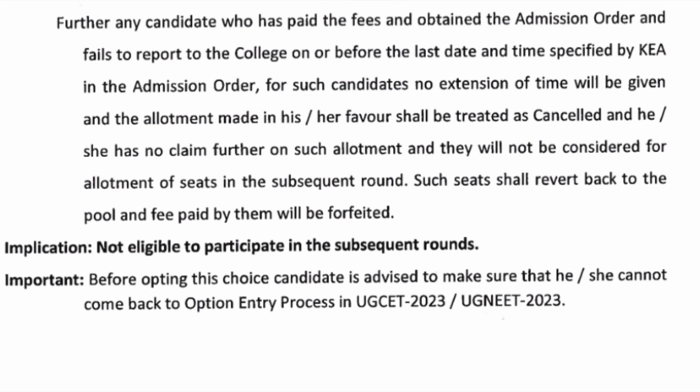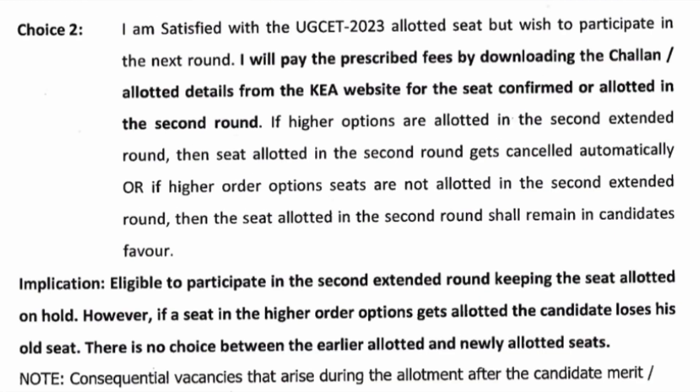Choice 1 means you are not eligible to participate in the subsequent round — you are happy with the college allotted. Next is Choice 2. Choice 2 means: I am satisfied with the college and the seat but I want to participate in the next round. Choice 2 students also need to pay the fees by downloading the challan from the KEA website. Once you have paid the fees, you do not need to report to college because you are going for the second extended round.